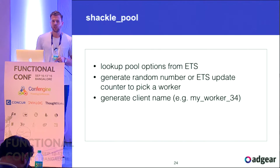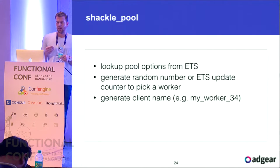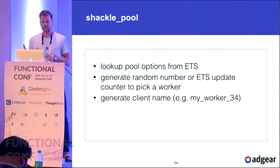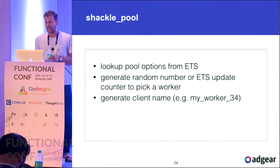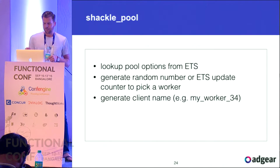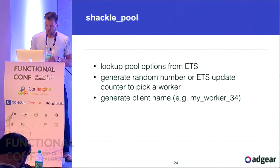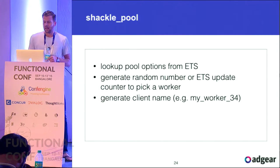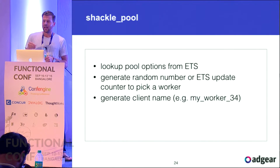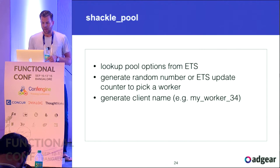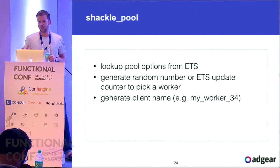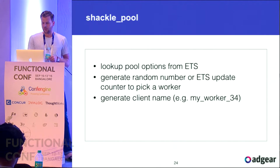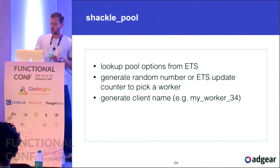Since we're only doing reads to the key where pool info is stored, there's no contention and very low overhead — almost constant time even as concurrency increases. How it works: look up pool info, check the strategy. If random, generate a random number from 1 to the number of workers. If round robin, update the counter, take the remainder of the number of workers, and pick the next worker. Then generate the worker name — for example, 'my_worker_34'.